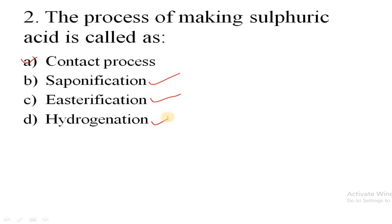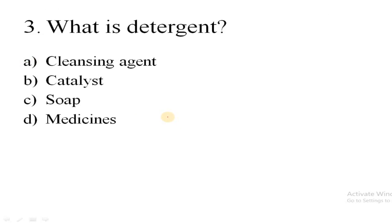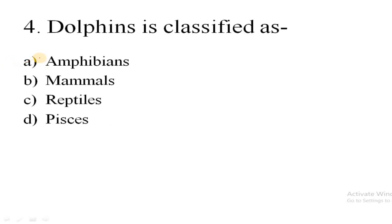Question is, what is detergent? Option A cleansing agent, option B catalyst, option C soap, option D medicine. Here the correct answer is A, that is cleansing agent.